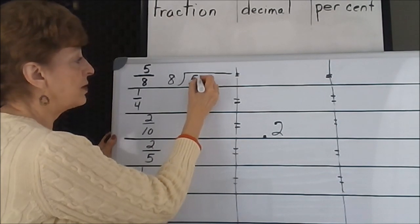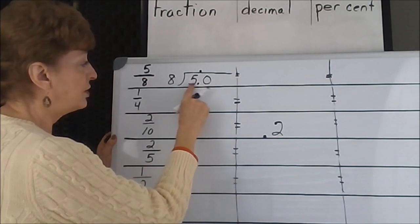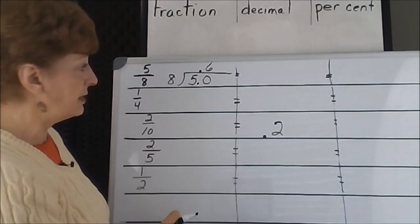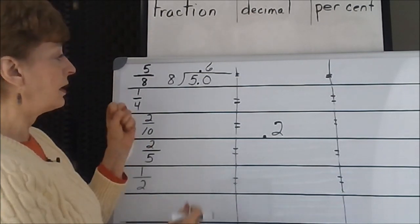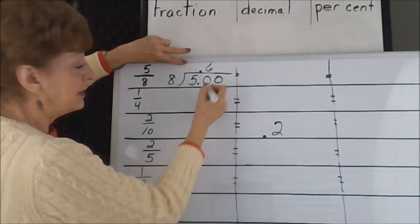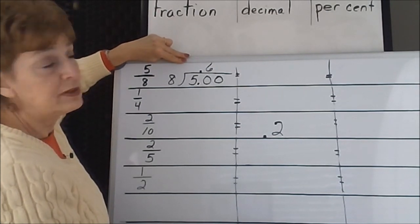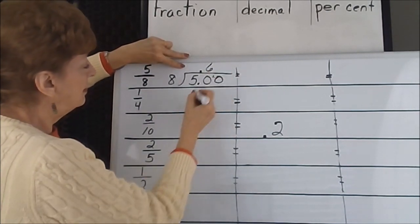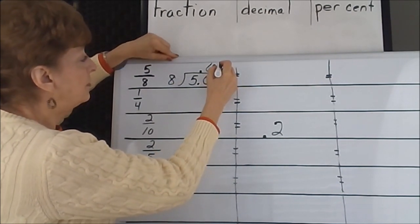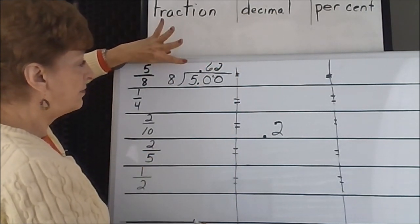The decimal point goes straight up into the answer. 8 divides into 50 six times. We have 6 times 8 is 48. With 2 remaining, we're going to add another 0 to it, just like we did before when we were working with our decimal numbers. The 2 remains. 8 divides into 20 two times. 2 times 8 is 16. Now we have 4 left over.